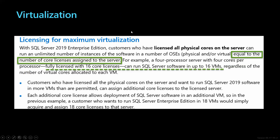Virtualization — this is getting a little technical, but worth pointing out. In Azure with Enterprise Edition and a dedicated host, you can license that host and then do a lot of virtualization on top of it. There is a limit: the number of VMs needs to be equal to the number of core licenses assigned to the server. For example, if you license a physical dedicated server with 16 cores, you can run up to 16 VMs as part of that. Another helpful detail from the guide.